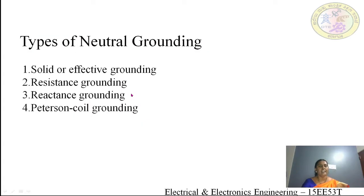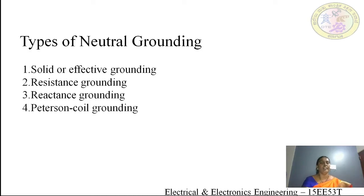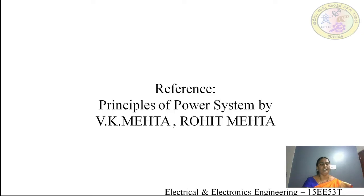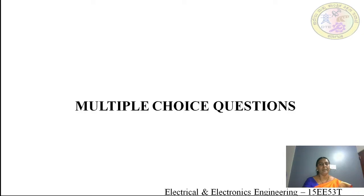Now let us look at the types of neutral earthing or neutral grounding. There are four types: solid or effective grounding, resistance grounding, reactance grounding, and Peterson coil grounding. This is covered in the book 'Principles of Power System' by VK Mehta and Rohit Mehta.